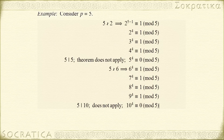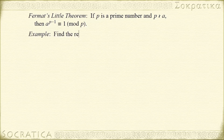Now, this may seem like a very specific theorem that doesn't have a lot of uses because all the exponents are 4. It turns out, though, you can use this in examples when the exponent is something else. Let me show you an example: let's find the remainder when you divide 3 to the 100,000th power by 53.